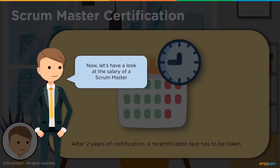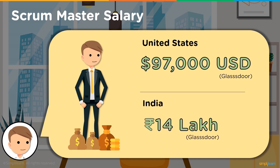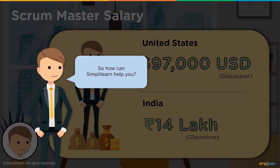Now let's talk about the salary of a Scrum Master. According to Glassdoor, in the United States a Scrum Master earns approximately $97,000 US dollars per annum. Meanwhile, in India a Scrum Master can earn up to 14 lakh rupees per annum.